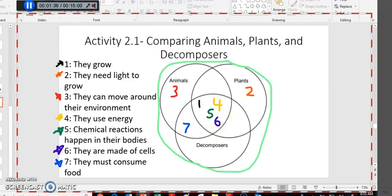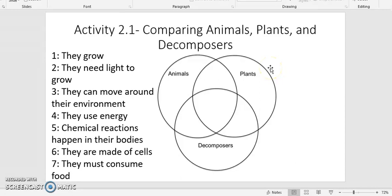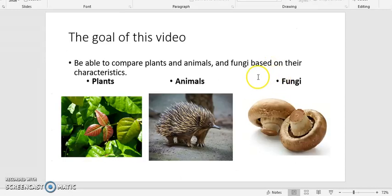So, I hope that this helps you to be able to compare plants, animals, and decomposers based on their characteristics. That is, after all, the goal of this video. So, what you should be able to do now is to look at a plant or an animal or a fungus and say, these are all of the traits that are unique to that organism.